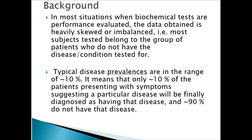In most situations when biochemical tests are evaluated, the data obtained is heavily skewed or imbalanced — most subjects tested belong to the group of patients who do not have the disease condition tested for. Typical disease prevalences are in the range of 10%, meaning only 10% of patients presenting with symptoms will be finally diagnosed as having the disease, while 90% do not have the disease.